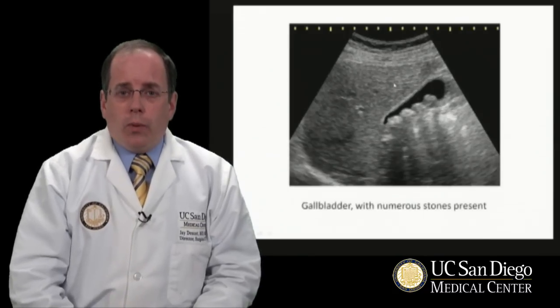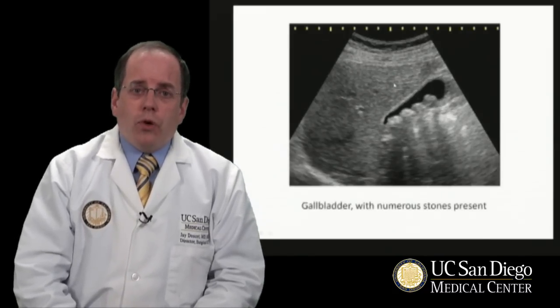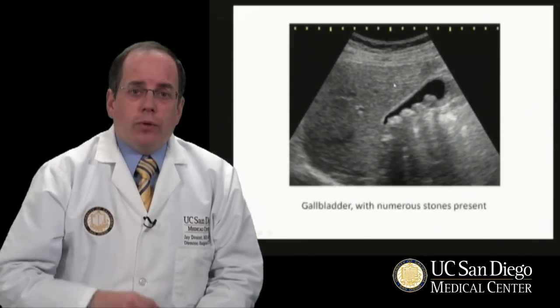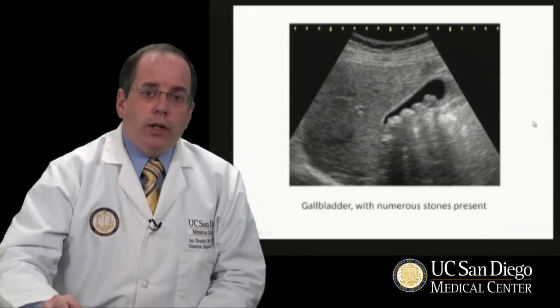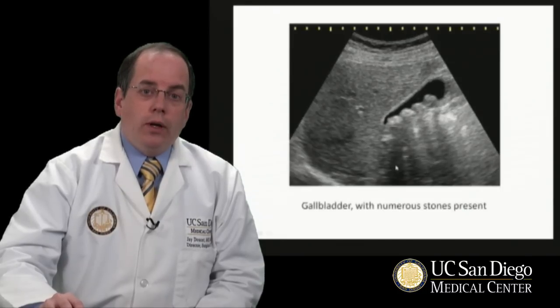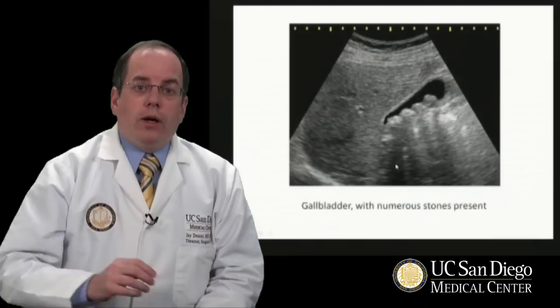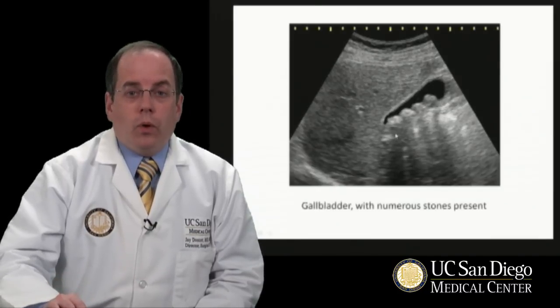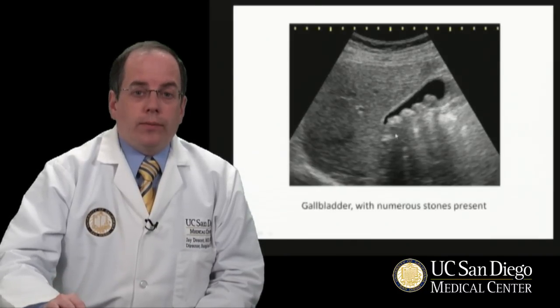Here's the gallbladder with stones. The stones usually have bright reflectivity, and you can see they're quite bright here. Behind each stone there's acoustic shadowing, which is pathognomonic of cholelithiasis.